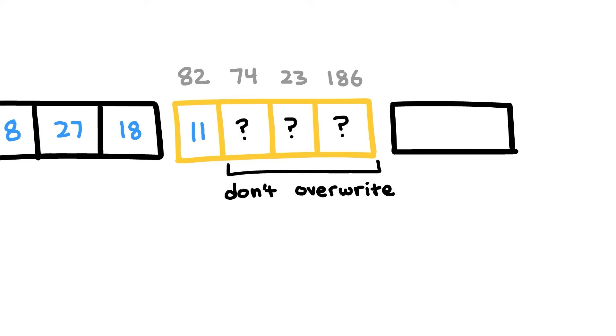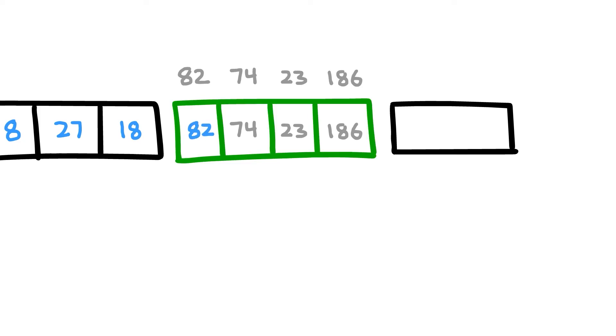we know that the remaining bytes are correct because they're a part of the original canary. Thus, once we choose the correct first number, the entire canary will be correct and the program will not crash. In this way, we're actually able to deduce one number at a time.